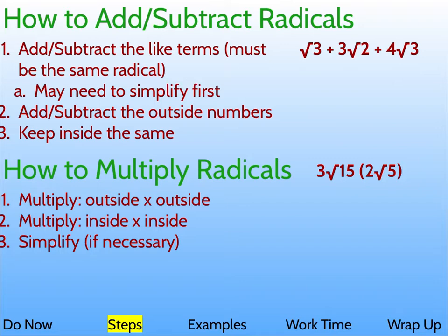If you look at the example here, we have radical 3 plus 3 radical 2 plus 4 radical 3. The like terms in this situation are the radical 3 and the 4 radical 3, because they both share that same number underneath the radical. This radical 2 thing, we can't really deal with that. Now one other note, you may need to simplify the radicals first, and then you'll see that they are actually the same radical, but maybe they don't look the same.